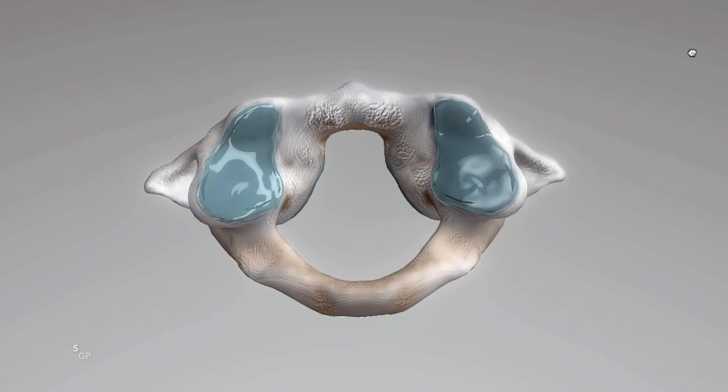This image shows us the C1 ring from above. We can appreciate that the anterior surface of the anterior arch is convex in shape. In its center is the anterior tubercle for the attachment of the longus coli muscles and the anterior longitudinal ligament.